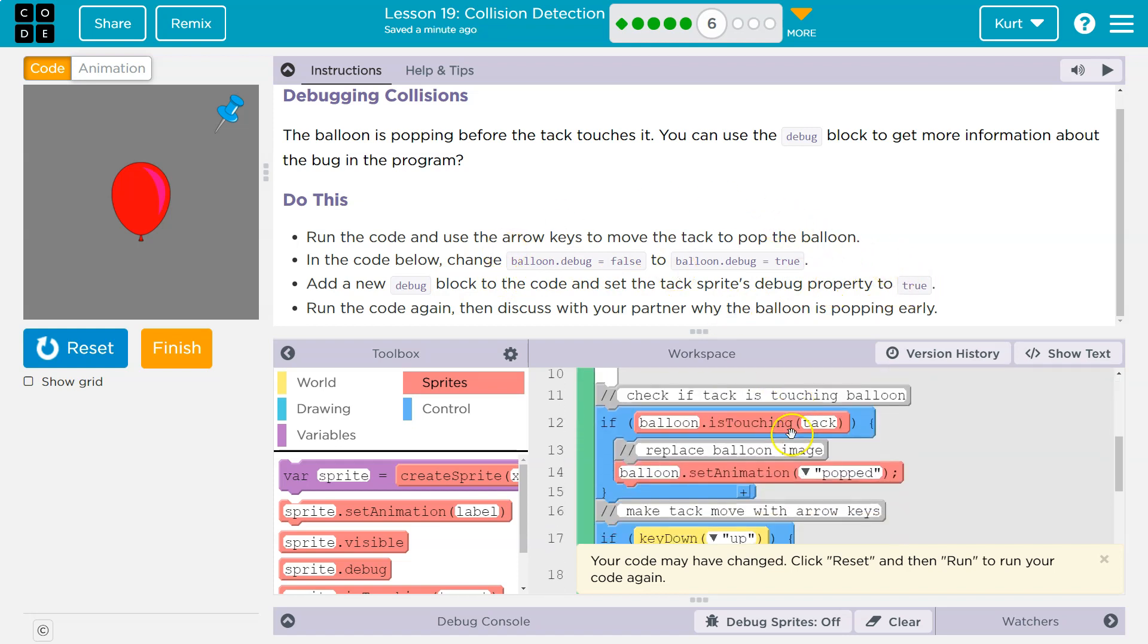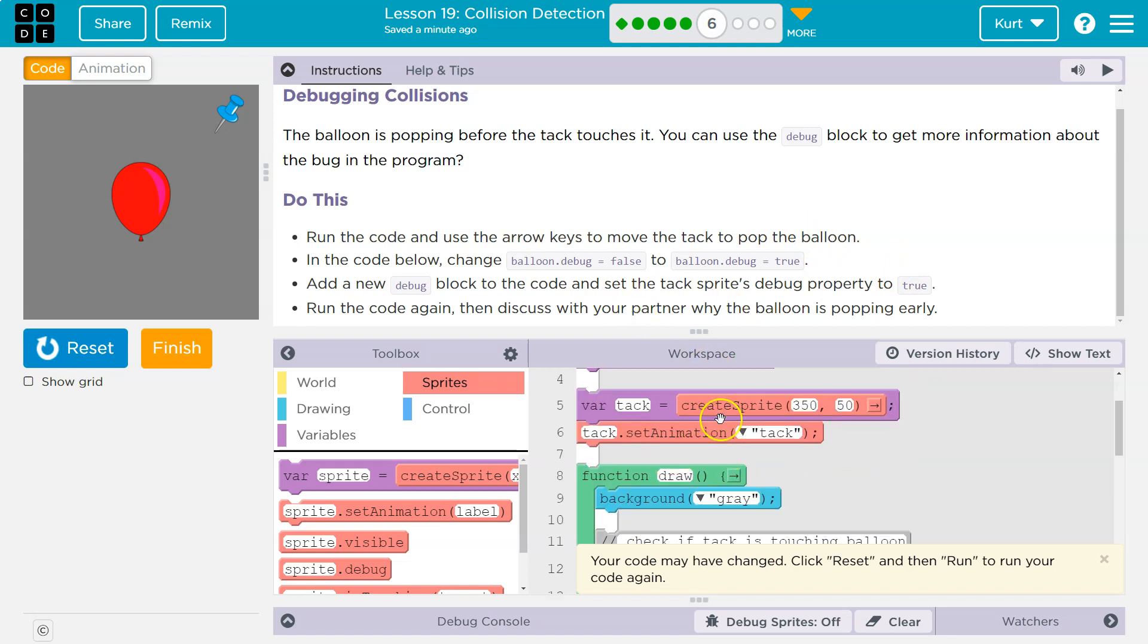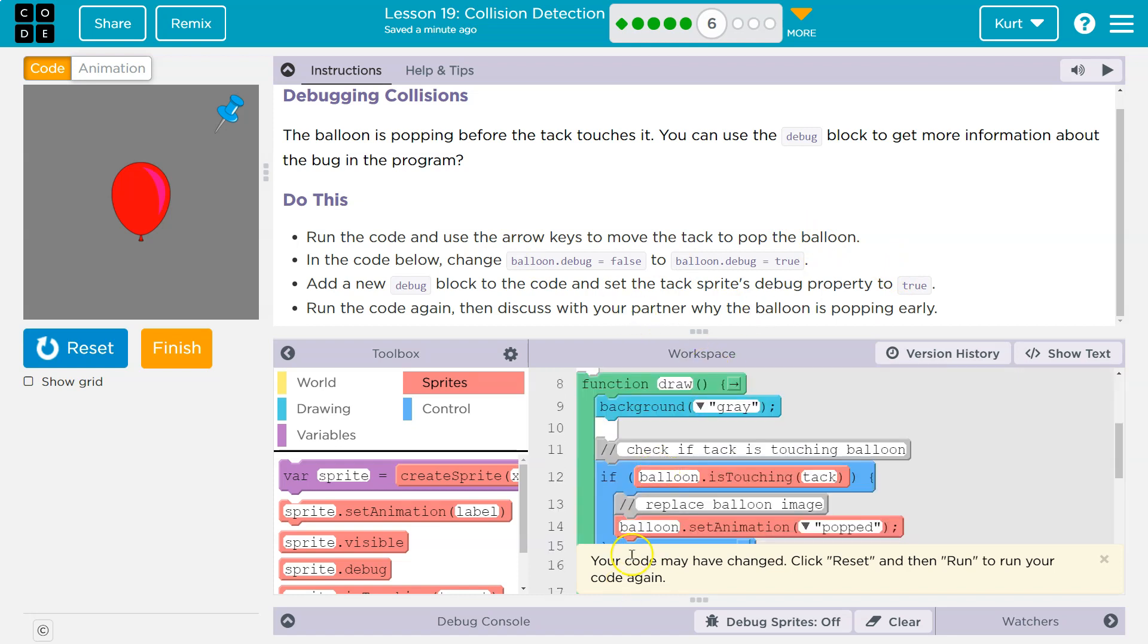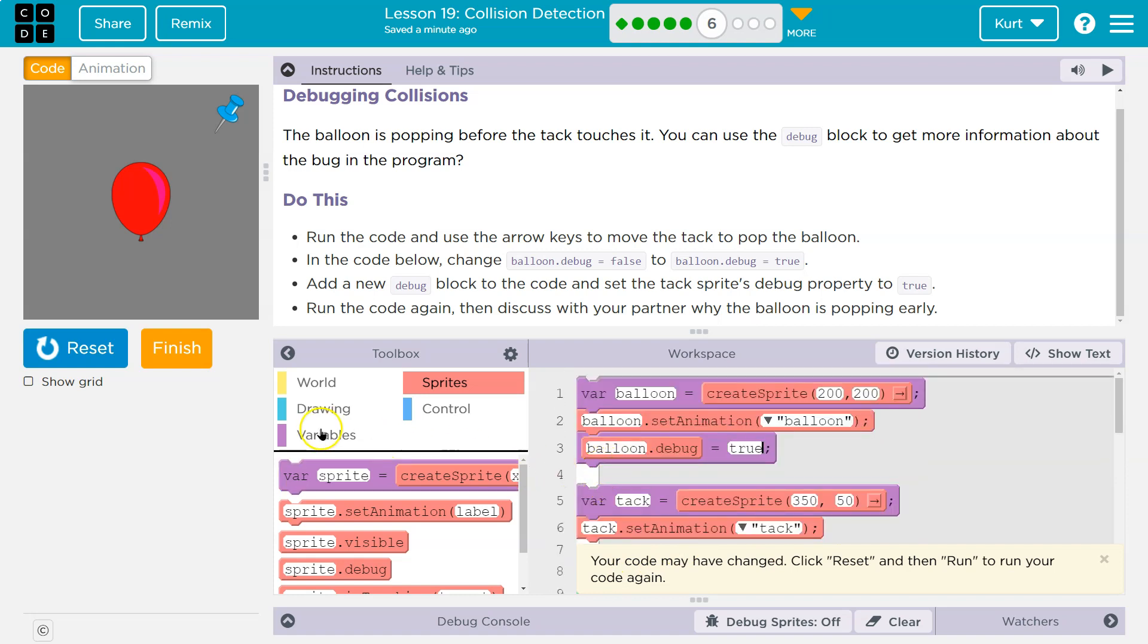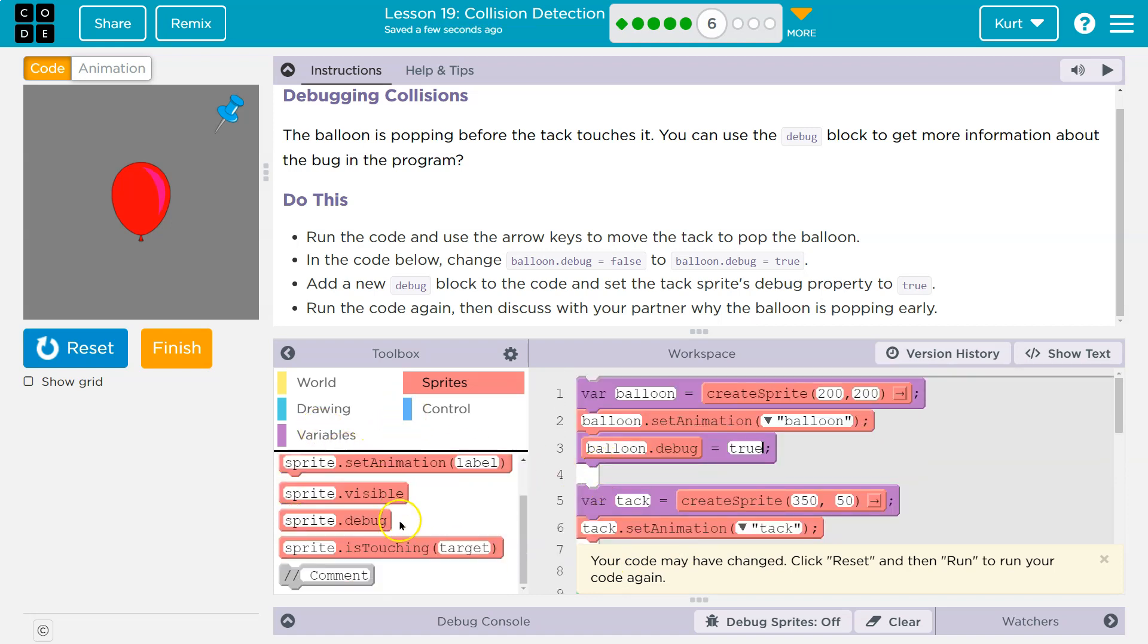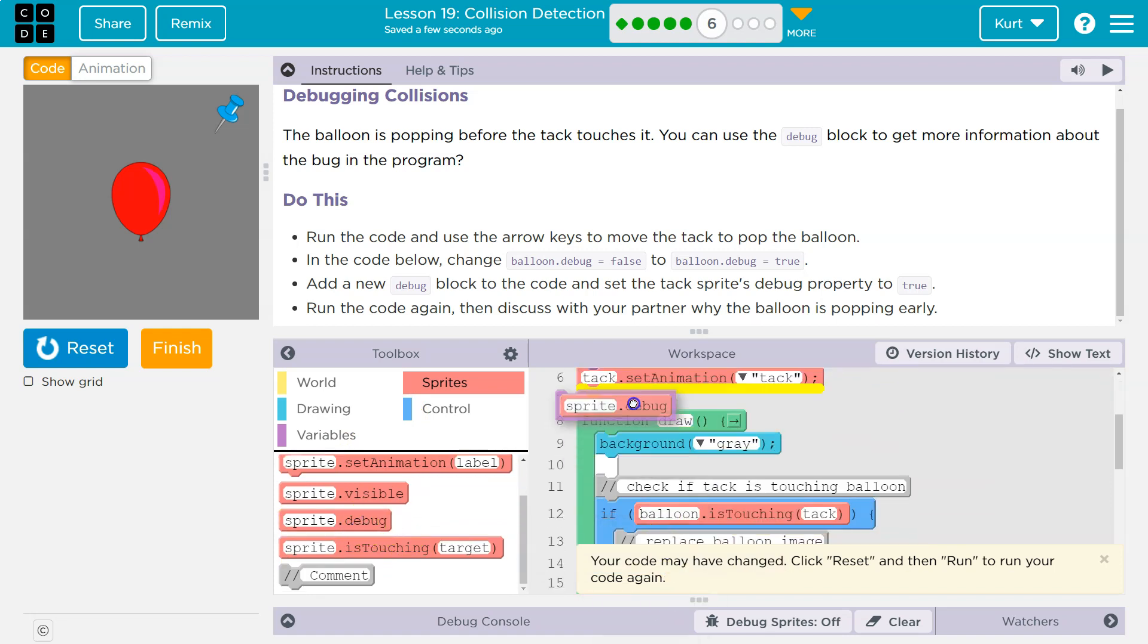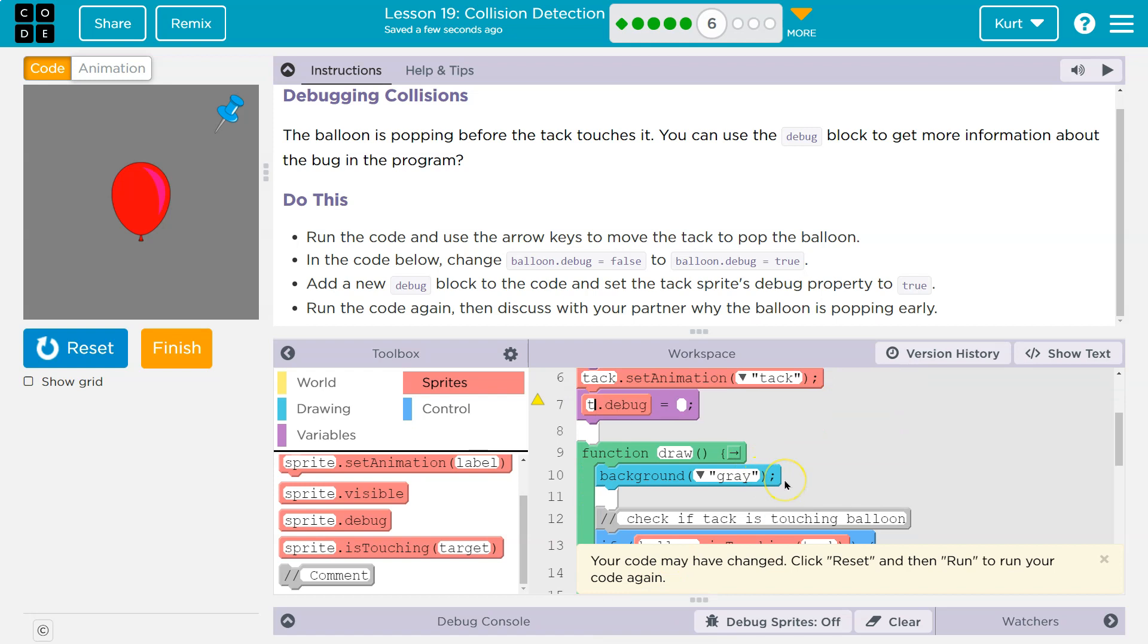Add a new debug block to the code and set the tack sprite debug property to true. Okay. So I'm going to add a new block. And this won't need to be in the draw loop because we're not changing it 30 times a second. We can just set it once and forget it. So let me grab sprite.debug, I'll put it under tack and say tack.debug is true. All right.